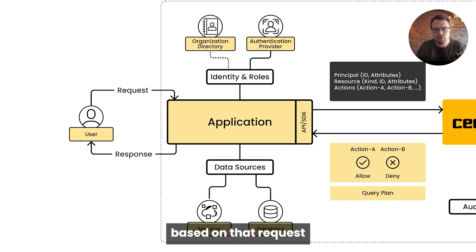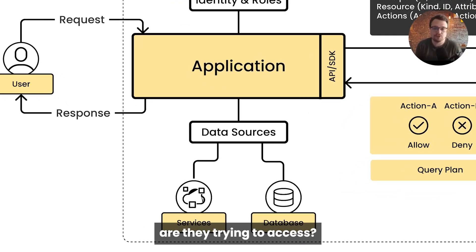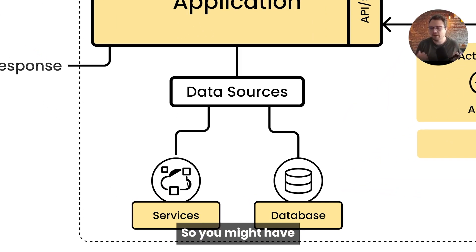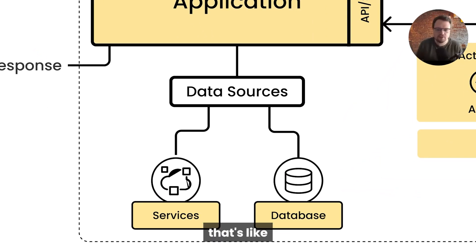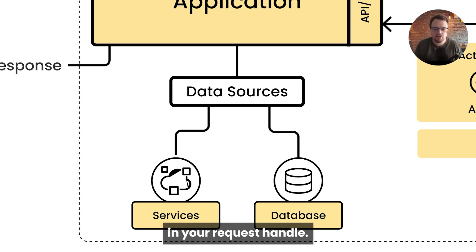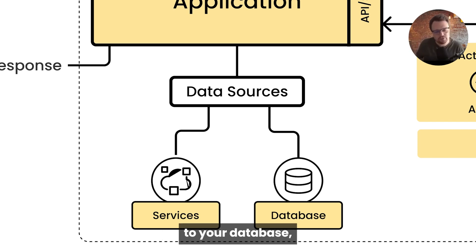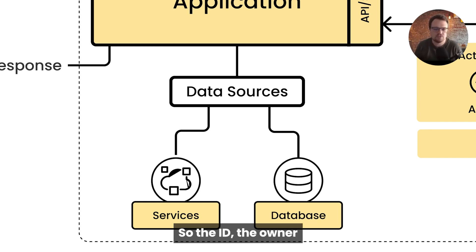The second thing your application knows based on that request is what resource are they trying to access? So you might have a standard REST endpoint that's like: get a resource of type ID XYZ. In your application, in your request handler essentially, you would go and fetch from your database or some third-party service that particular resource along with its attributes.